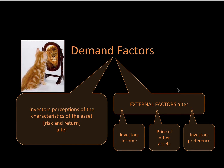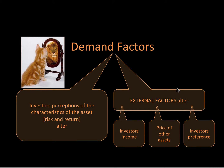So we've got demand factors here. These are from my old study notes — I'm going to be using some random pictures just to help me remember the information. The first demand factor is the investor's perception. That's why I've got a picture of a cat who perceives himself to be a lion — it's all about the investor's perception of the characteristics of the assets, like risk versus return. So what is going to influence this investor's perception?